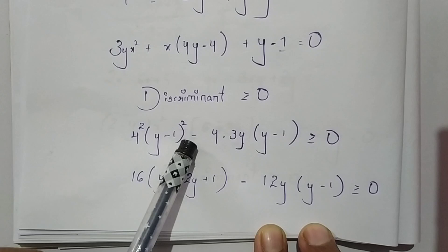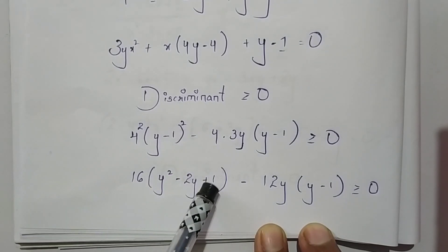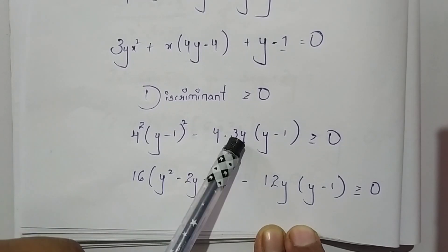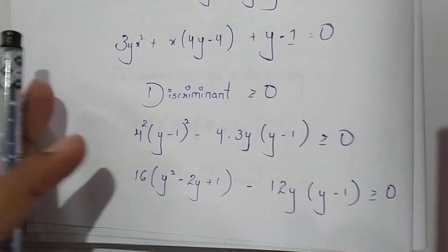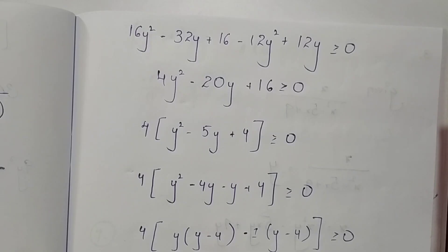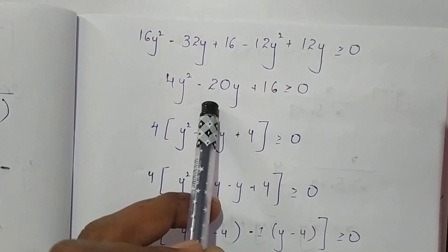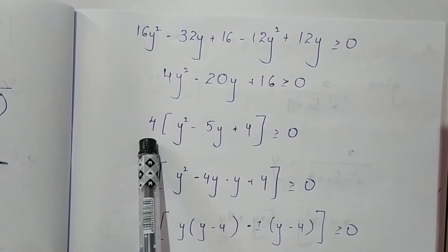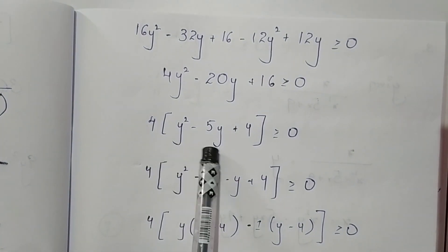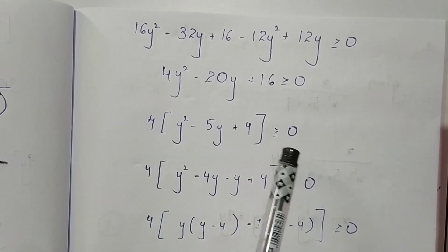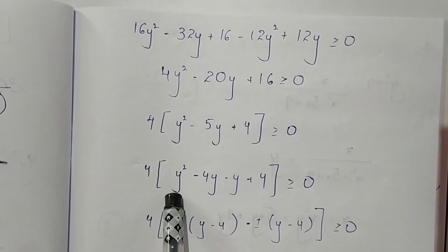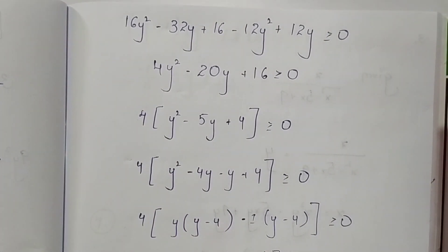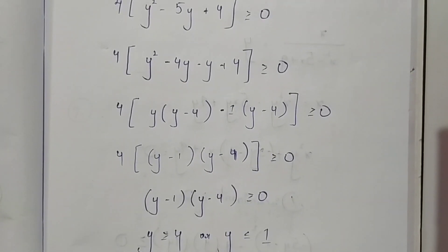So 16(y-1)² will expand to 16(y² - 2y + 1), and 4 × 3 = 12y, so 4ac = 12y(y-1). On solving this we get 4y² - 20y + 16 ≥ 0. Taking 4 as common we get y² - 5y + 4 ≥ 0.